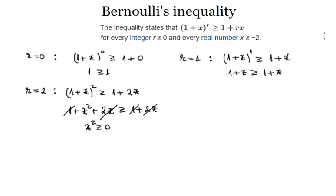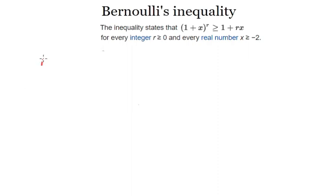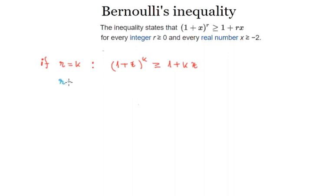So we've tested the inequality for three values of r and it's valid for every one of them. Now we take a leap of faith and say we believe the inequality is true for any integer k. So when r is equal to k, where k is any integer greater than or equal to 0, we assume that 1 plus x to the power of k is greater than or equal to 1 plus kx. What we need to do for mathematical induction to work is prove this for r equals k plus 1.